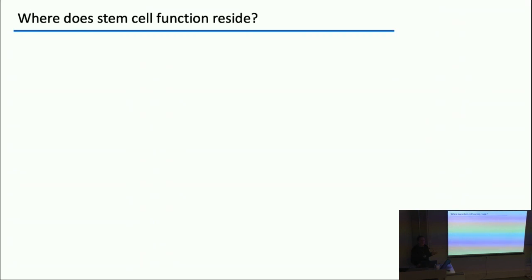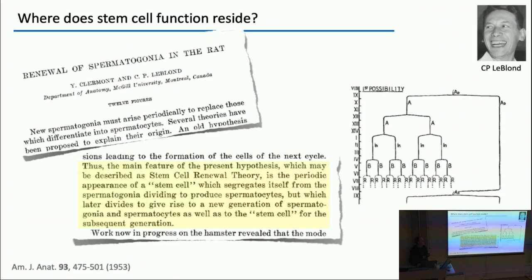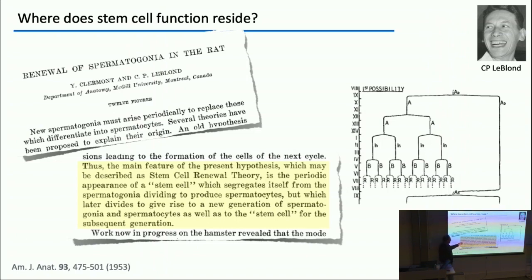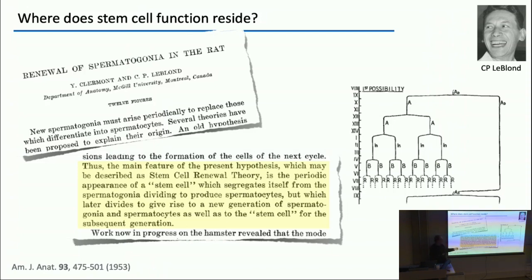Where does stem cell function reside? Is it the A-singles, or is it shared across a wider compartment? This is quite an old question. Charles-Philippe LeBlanc asked it in 1953. His main hypothesis — the stem cell renewal theory — was the periodic appearance of a stem cell which segregates itself from spermatogonia, dividing to produce spermatocytes. His idea was that an A-single population divides asymmetrically: one daughter stays as a stem cell, the other enters irreversibly into the differentiation program.